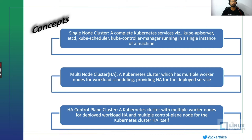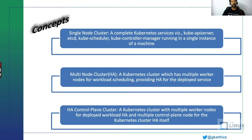But that high availability is not available for the control plane if the cluster has only one control plane node. The next type is the highly available control plane cluster — you will have three different worker nodes and three different control planes. Almost all CNCF certified Kubernetes distributions use etcd, which uses the Raft protocol and runs in the master node — the control plane node. That is where all your data and the state of resources are stored. The Raft protocol requires an odd number of instances to elect a leader and reach consensus, so we have an odd number of control planes and any number of worker nodes.